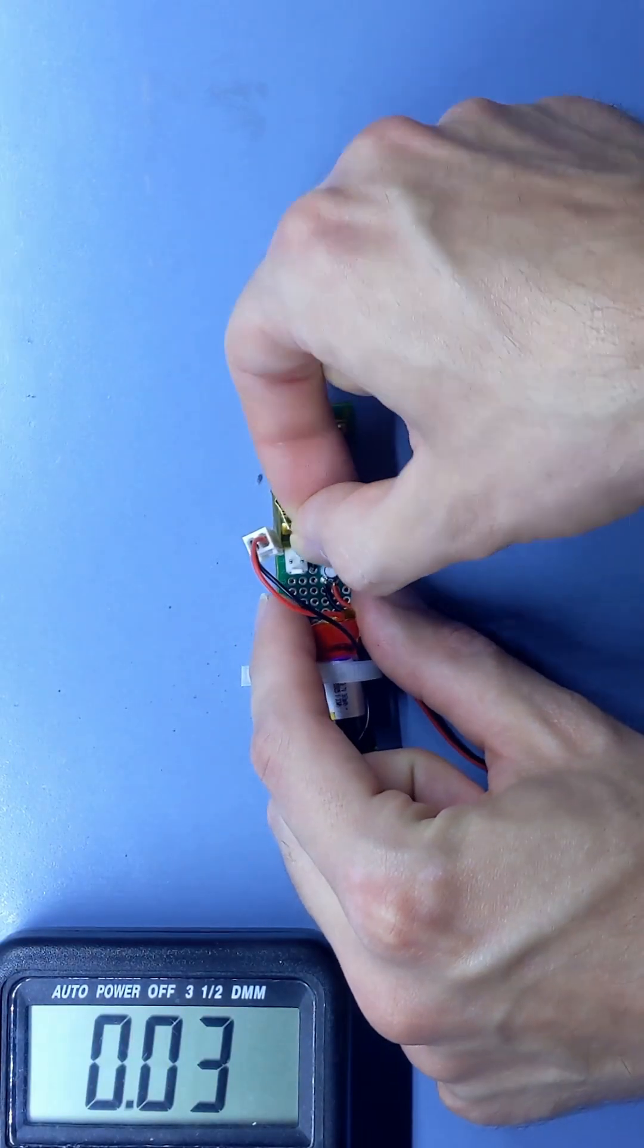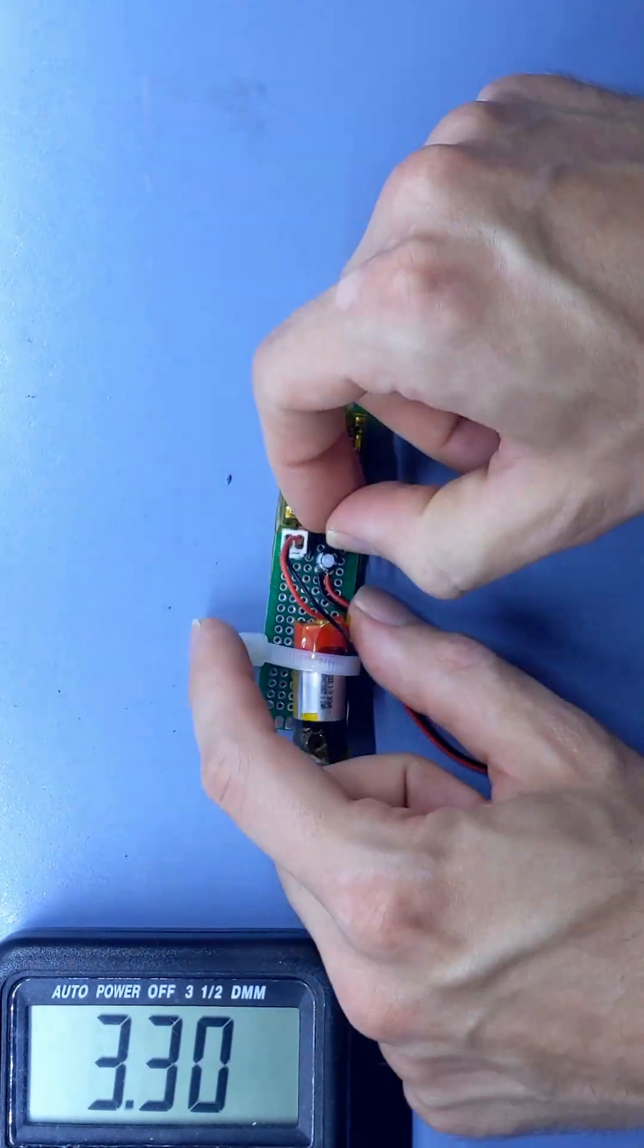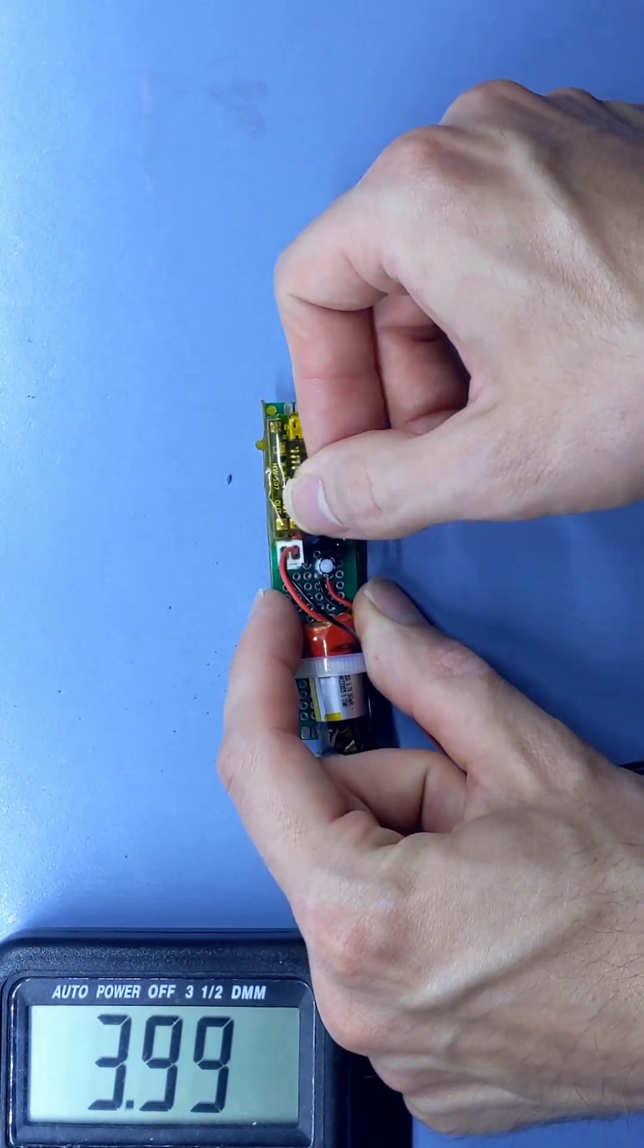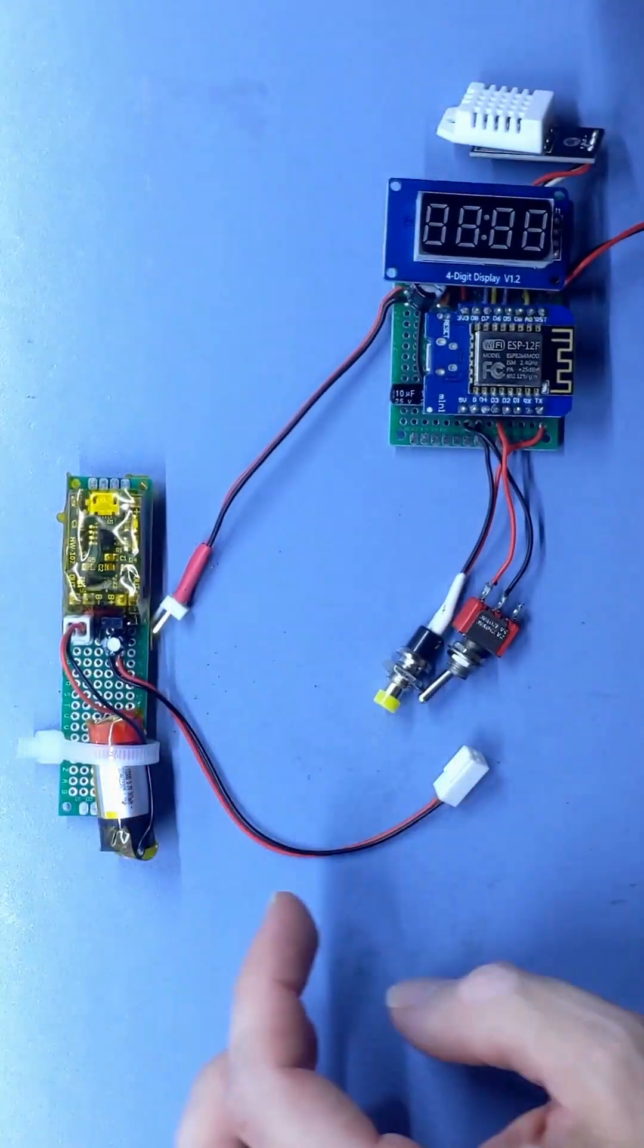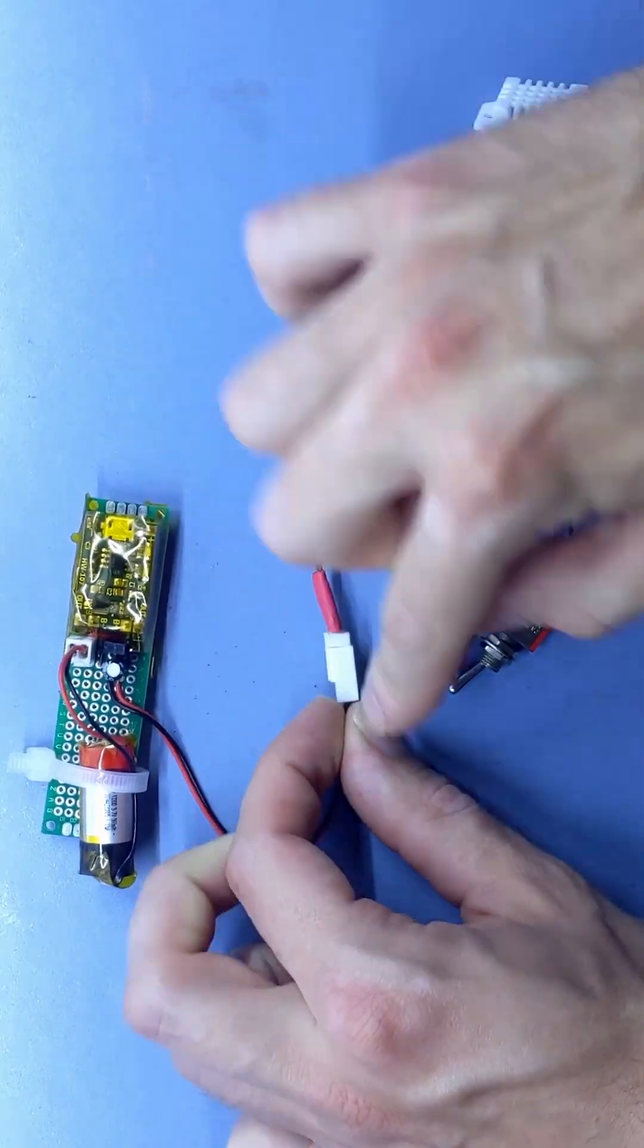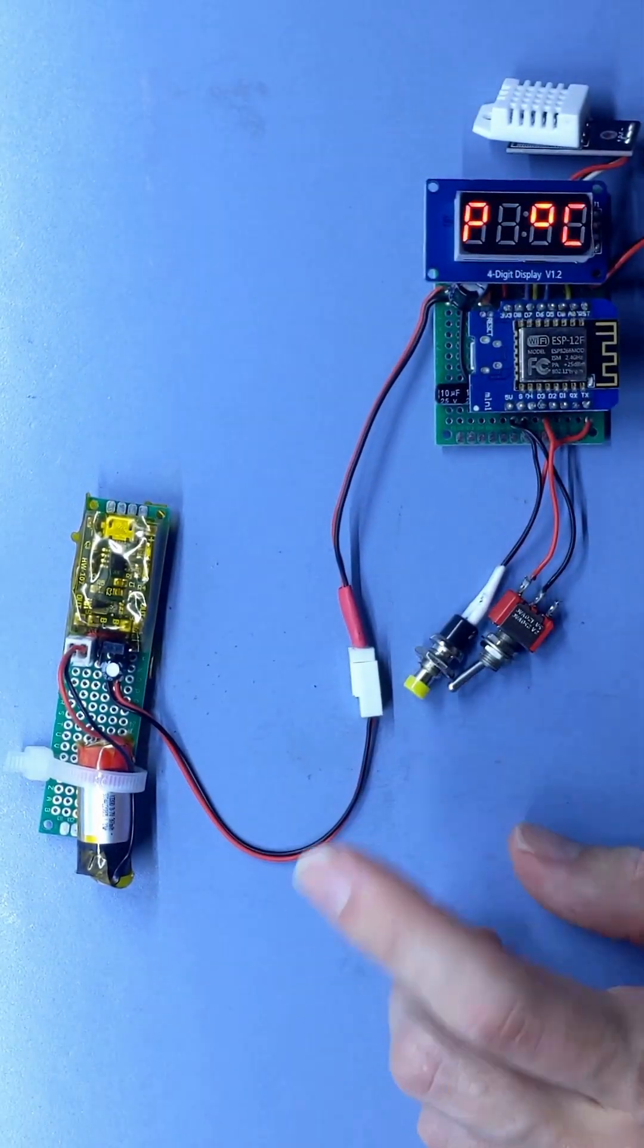With this little jumper we can set the output voltage either to a regulated 3.3V or output straight cell voltage. Now we can use it to power our devices, like this temperature monitor I'm working on, although this needs to be replaced with a proper connector once they arrive.